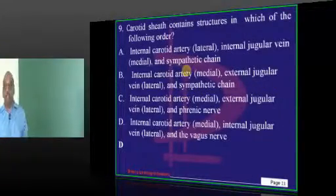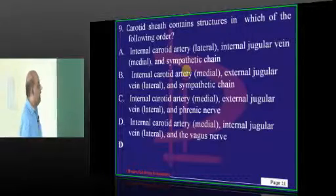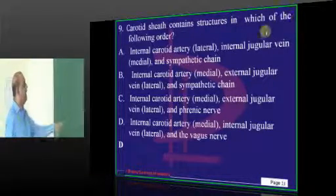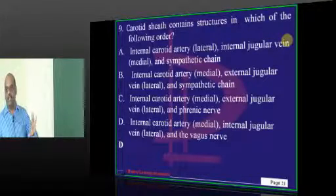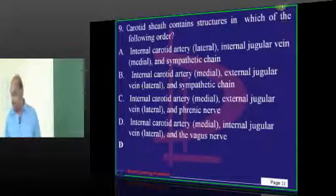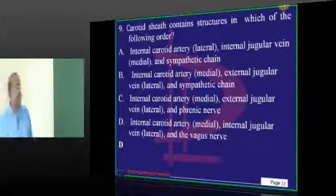Now, coming to the carotid sheath, internal carotid is most medial, internal jugular is lateral, and comes the vagus. That is a typical anatomical arrangement in the carotid sheath is what needs to be fundamentally remembered.